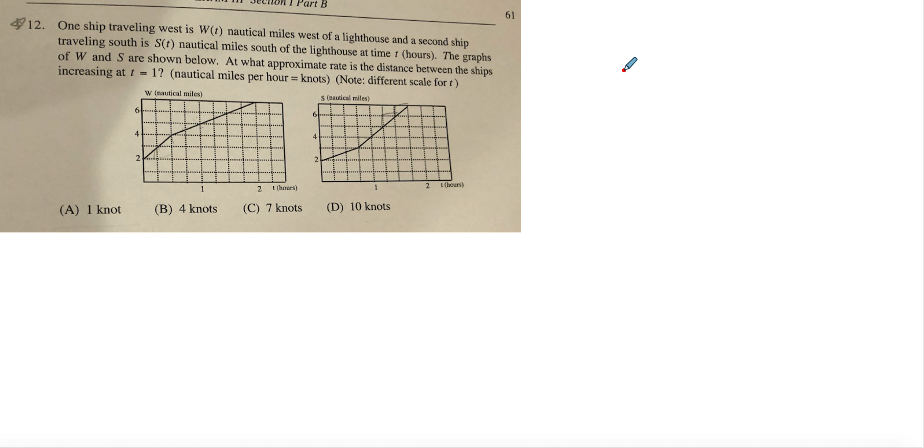Since one of them is going to the west, the other one is going to south, and distance is given in this way, the relationship is d squared equals s squared plus w squared.